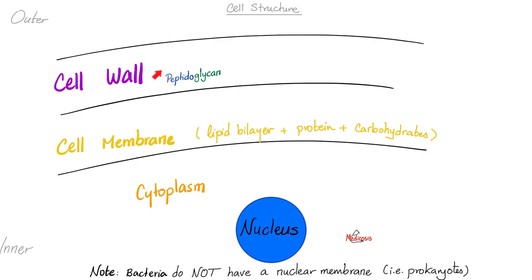If you want to be a pro: the cell wall has two things and the cell membrane has two things. Number one, the cell wall has peptidoglycan and teichoic acid. The cell membrane has the lipid bilayer, proteins, carbohydrates, and lipoteichoic acid. So teichoic acid is in the cell wall, but lipoteichoic acid is in the cell membrane. The way to remember it is that lipoteichoic belongs with the lipid bilayer.